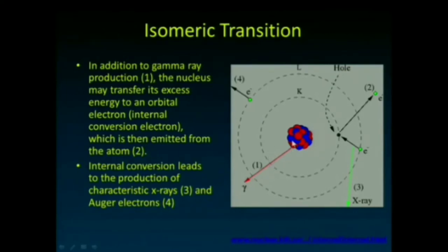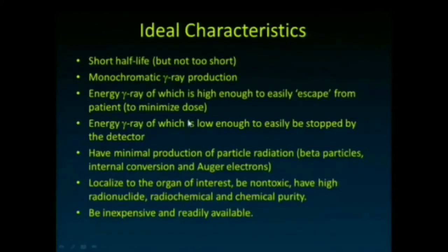In technetium-99m, 88% of the decays result in the production of a gamma ray, while only about 12% of events result in internal conversion electrons. Of course, we'd love that to be zero, because that would mean less dose in the patient.